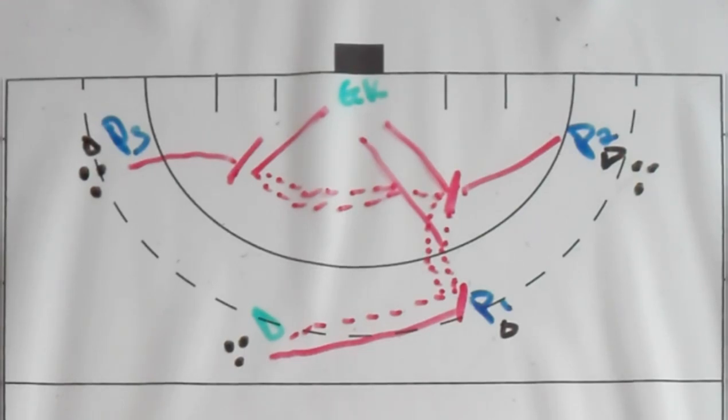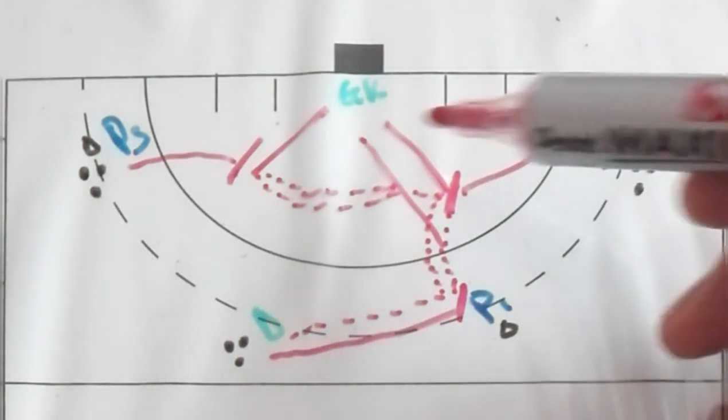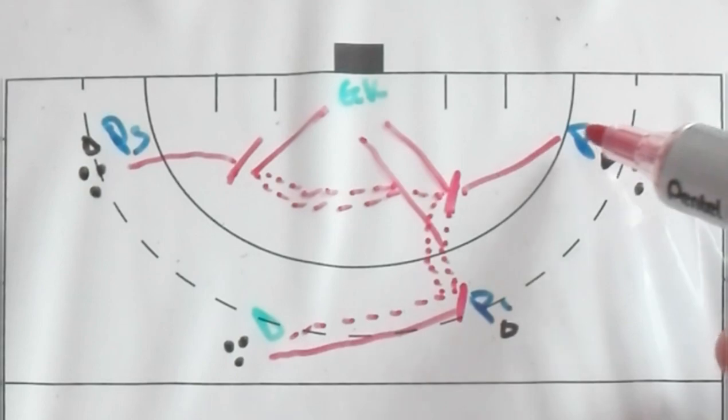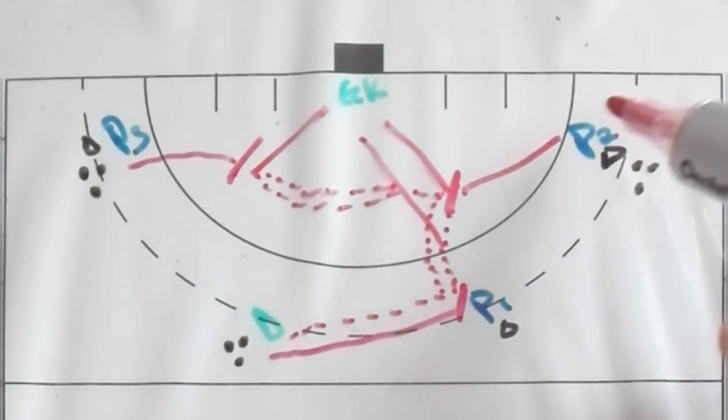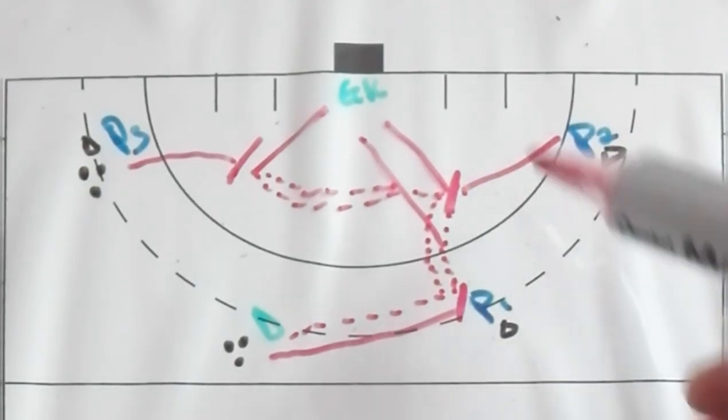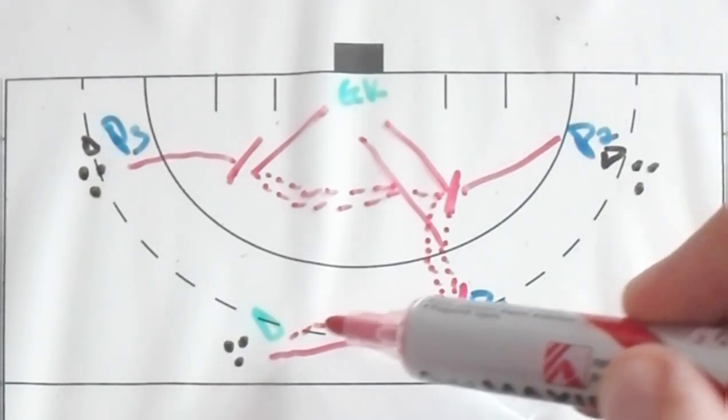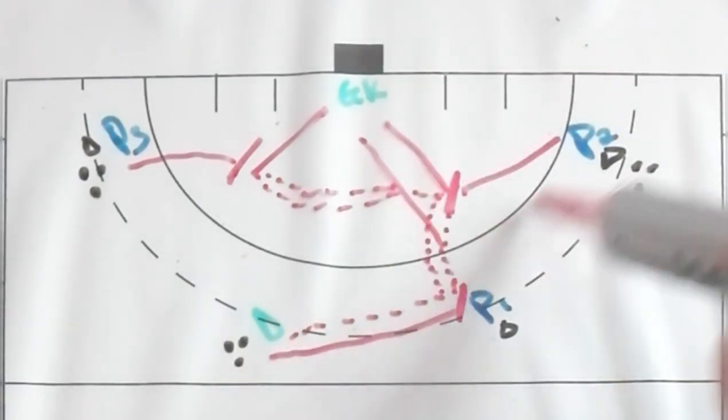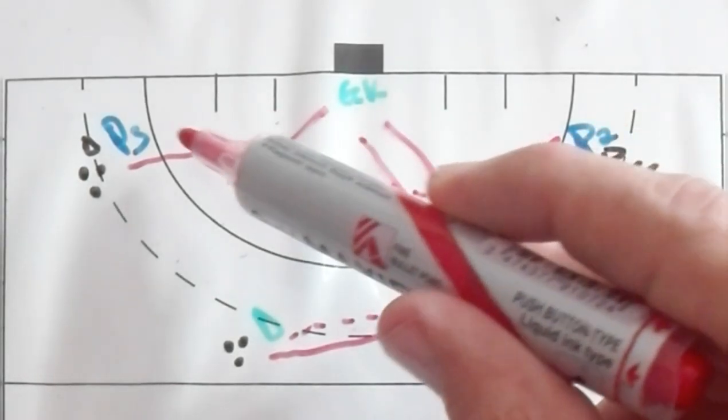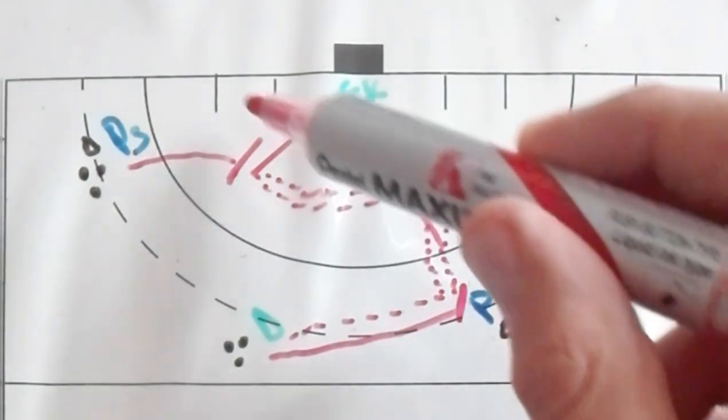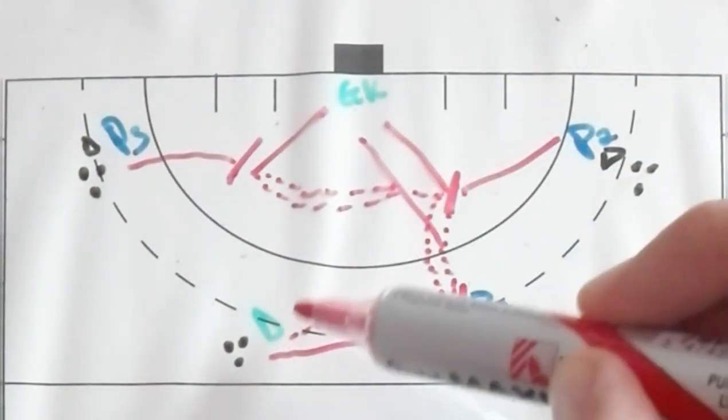You can work with a nice little progression as well. As soon as player one takes the first shot and gets the ball from player two, this can become a 2v1 against the defender. And then as soon as this is played out, the next ball that's coming from player three can also be a 2v1 against the defender.